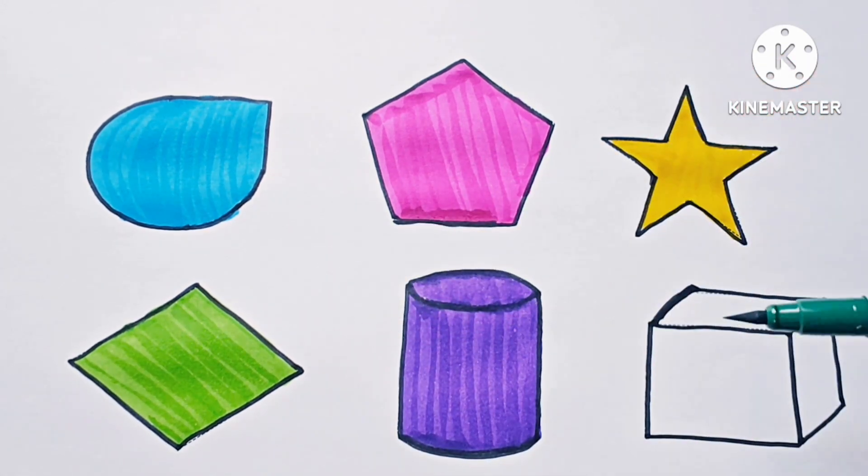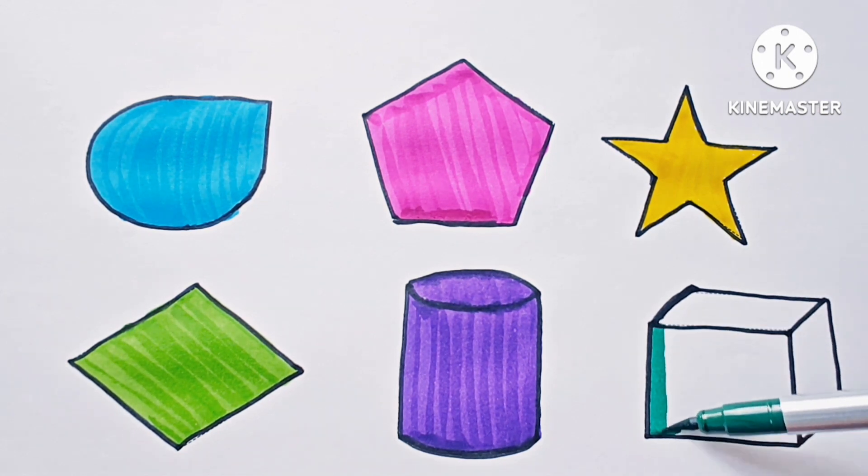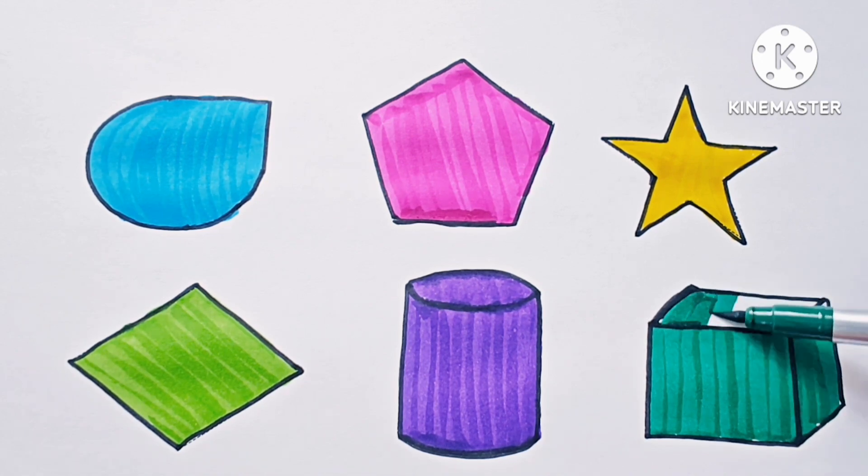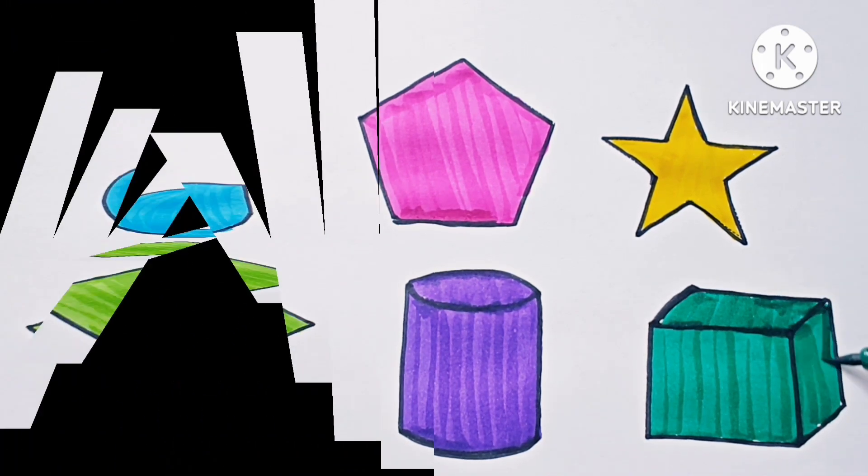This is dark green. And this shape is cuboid. And it is a 3D shape.